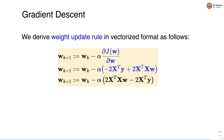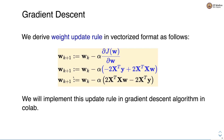The new value of the weight vector is set to the old value minus alpha times the partial derivative of the loss with respect to the weight vector. This weight update rule is implemented in the gradient descent algorithm, which we will see in the colab demonstration.